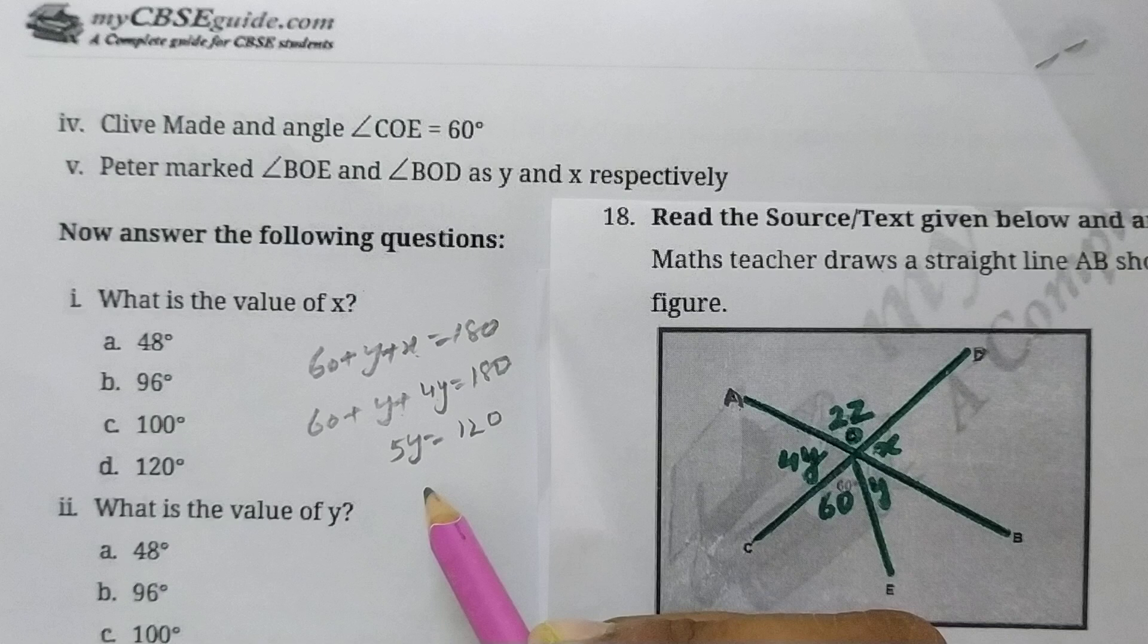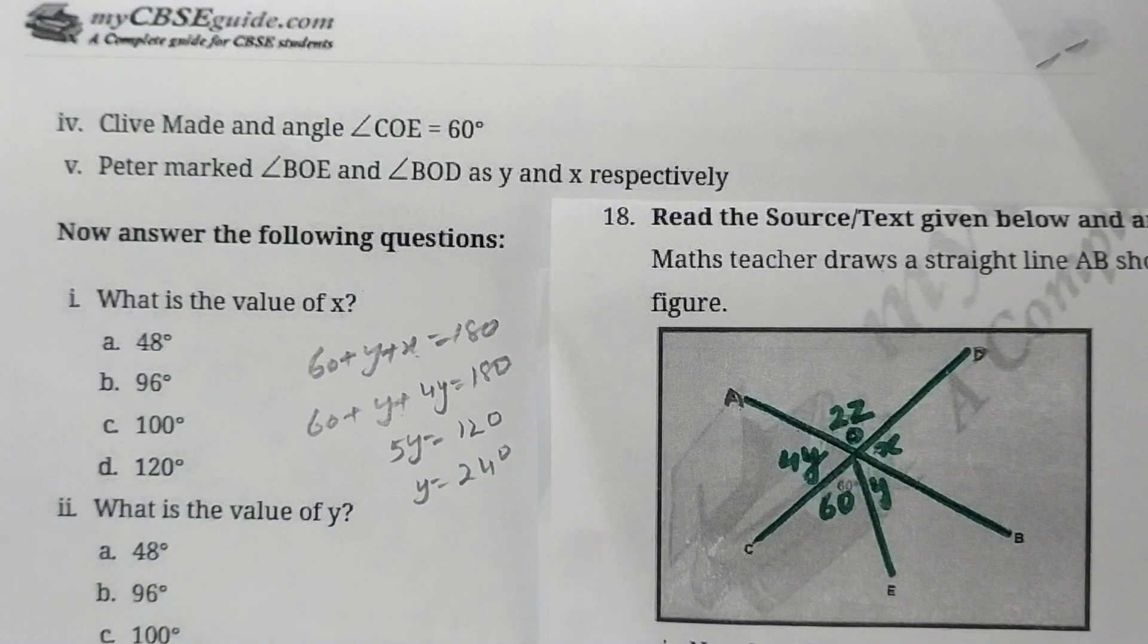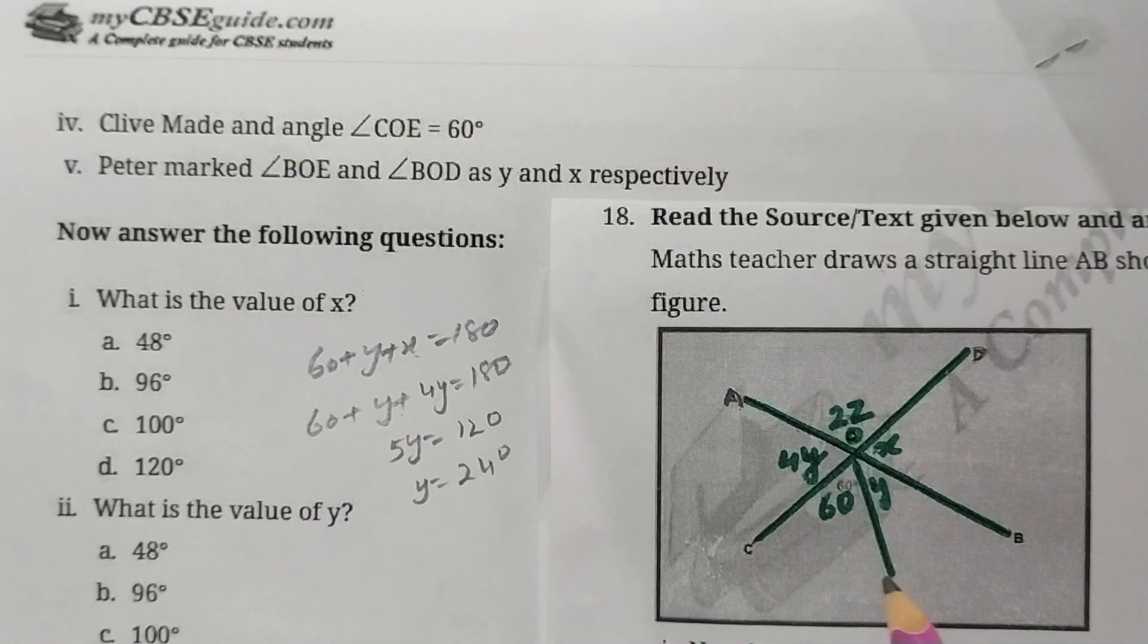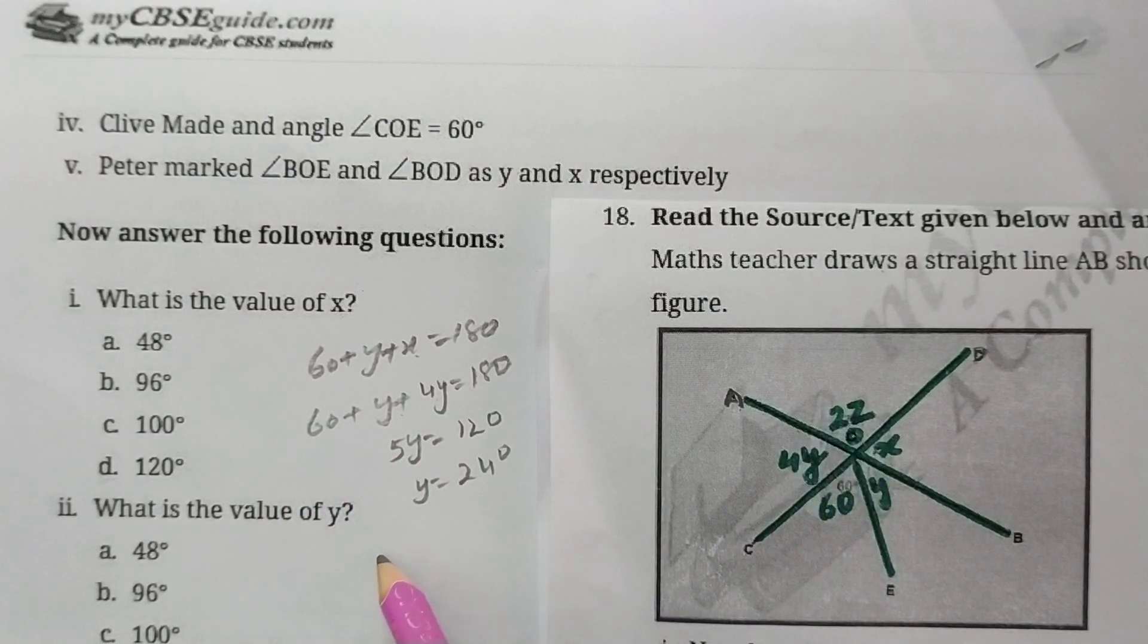So y is 24 degrees. Now you have to find x. See here, x is equal to 4y. So x is equal to 4 times 24, which is 96 degrees.